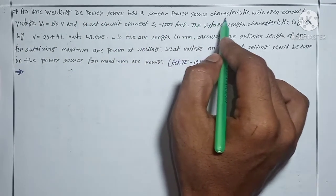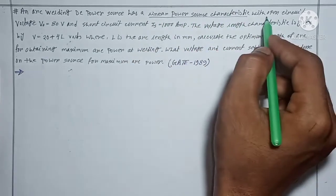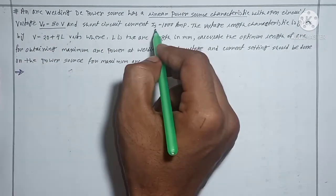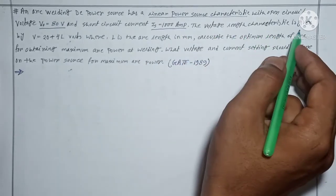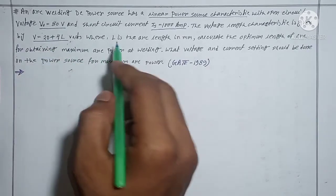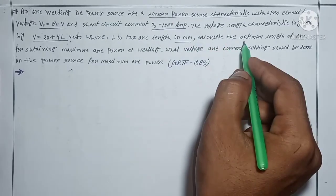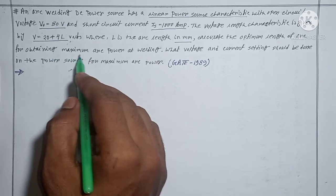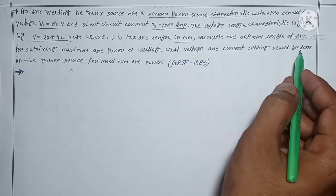The linear power source characteristic has open circuit voltage V₀ equal to 80 volts and short circuit current Isc equal to 1000 amperes. The voltage-length characteristic is given by v = 20 + 4l volts, where length l is the arc length in mm.